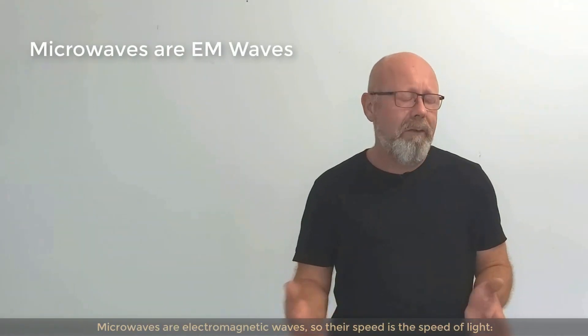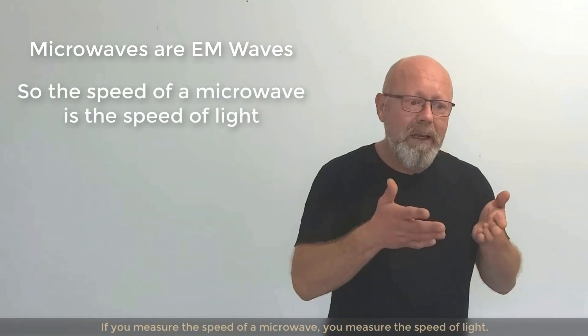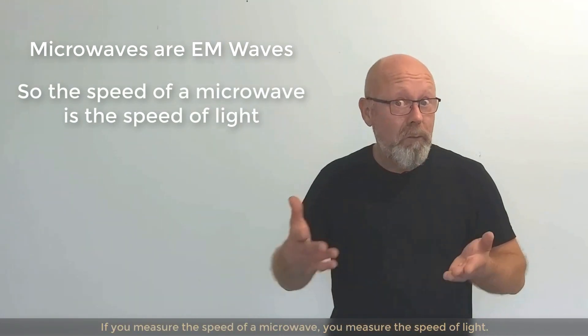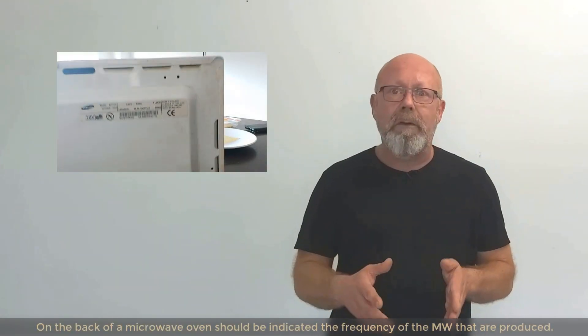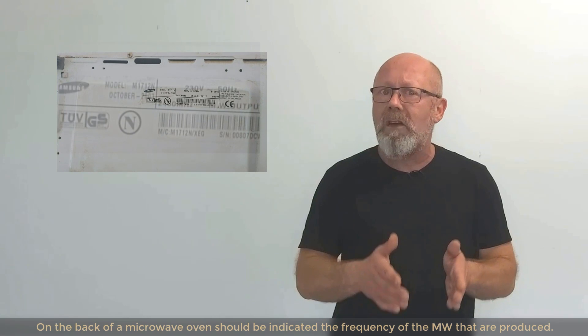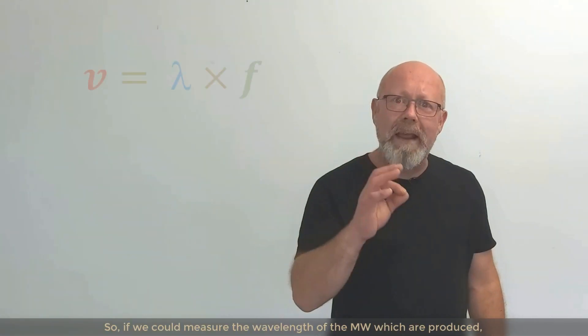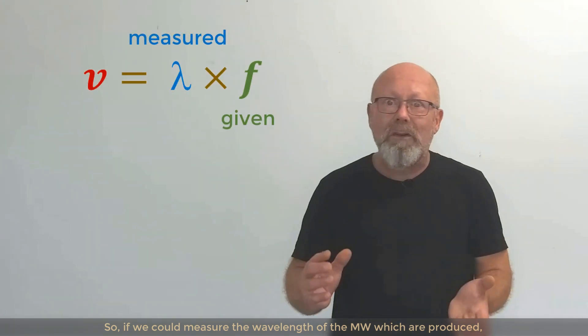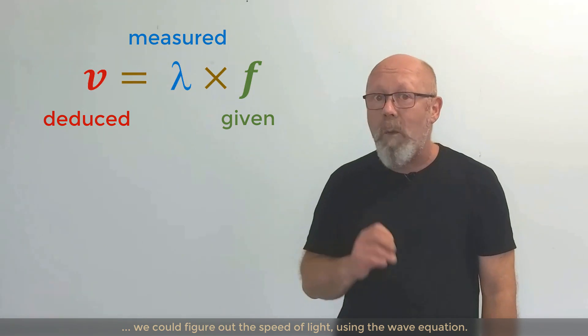Microwaves are electromagnetic waves, so their speed is the speed of light. If you measure the speed of a microwave, you measure the speed of light. On the back of a microwave oven, there should be indicated the frequency of the microwaves that are produced. So if we could measure the wavelengths of the microwaves which are produced, we could figure out the speed of light using the wave equation.